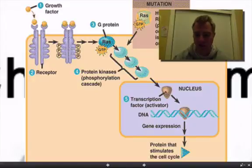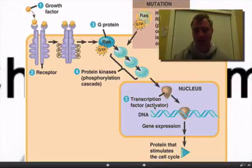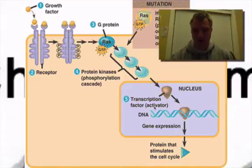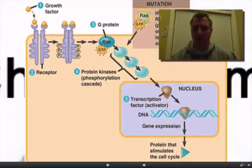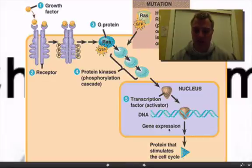Inside the nucleus, it reaches a transcription factor — this is an activator. Remember, the activators are what attach to the control elements, and that will trigger that gene to be expressed and will stimulate the cell cycle.